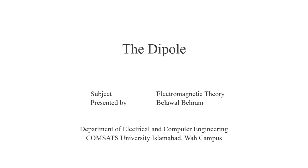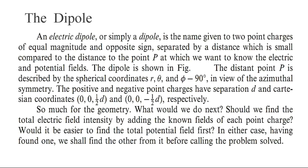In our last class we discussed the potential field due to a point charge and a system of charges, and then we introduced a new terminology — the potential gradient. Today we will use that terminology to determine the potential field and the electric field intensity at a point due to a dipole. A dipole is the name given to two point charges of equal magnitude and opposite sign.